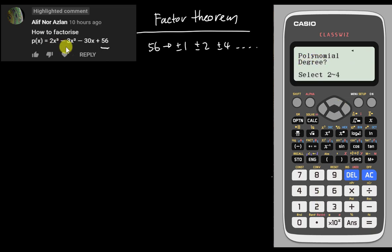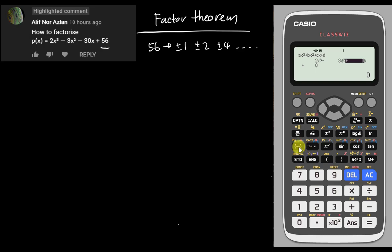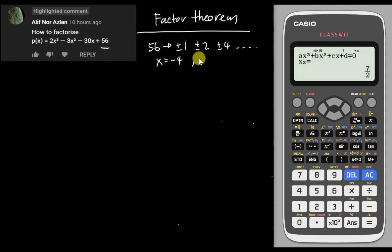I select the degree, which is power 3, so I type 3. My a is 2, b is negative 3, c is negative 30, and d is positive 56. After entering, the calculator shows me the three x answers: x equals negative 4, x equals 7 over 2, and x equals 2.